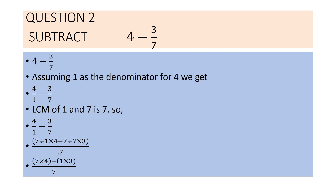Question 2: subtract 4 minus 3 by 7. Assuming 1 as the denominator of 4, we get 4 by 1 minus 3 by 7. The denominators are not the same, so we find the LCM of 1 and 7, which is 7.